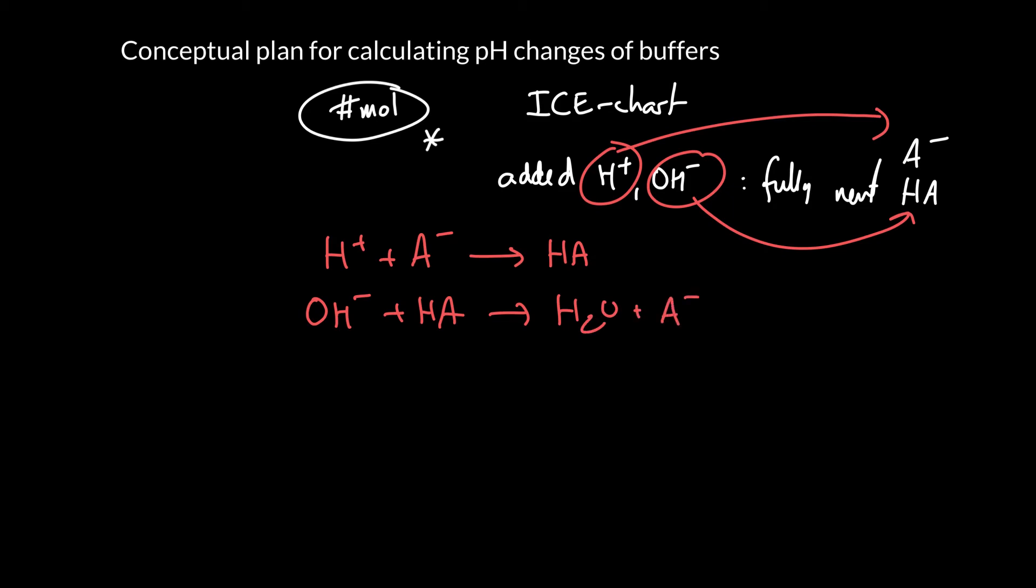So that's the very first thing we're going to do. And we are assuming 100% conversions of these reactions. If you calculate their equilibrium constants, what you'll find is that they're extremely large. And so we can essentially assume that any added H-plus completely goes to consuming A-minus, and any added OH-minus goes to completely consuming HA.